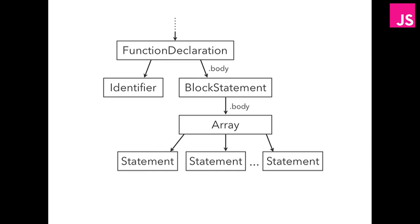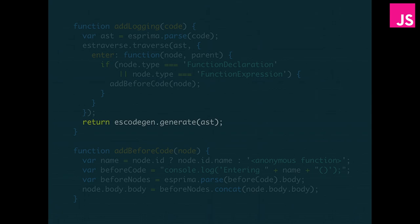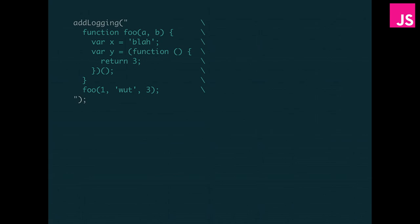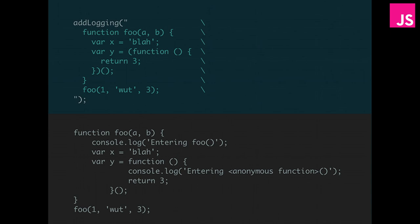I've modified the original parse tree. The next step is to emit code — using the es-code-gen module, I actually generate new source code from the modified parse tree. So I took in the original code, modified the parse tree, and I'm spitting out some new JavaScript. Then I can run that JavaScript and it's going to log all the function enters. I could do this across a thousand source files if I wanted.